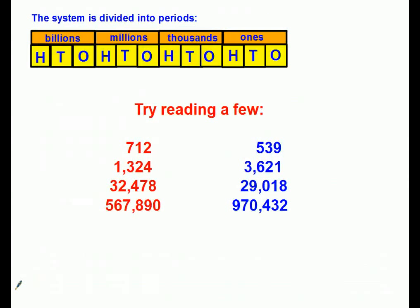So let's give you a little practice reading larger numbers. We'll start small because I know you can handle those. I'll read the red ones so you'll have a sample, and then you get to read the blue ones — I'll give you a second to figure it out before I tell you. The first number in red is 712. Now you read the blue number. It's 539. The second one shouldn't be too hard: you're looking at 1,324. You try the blue one. It's 3,621.